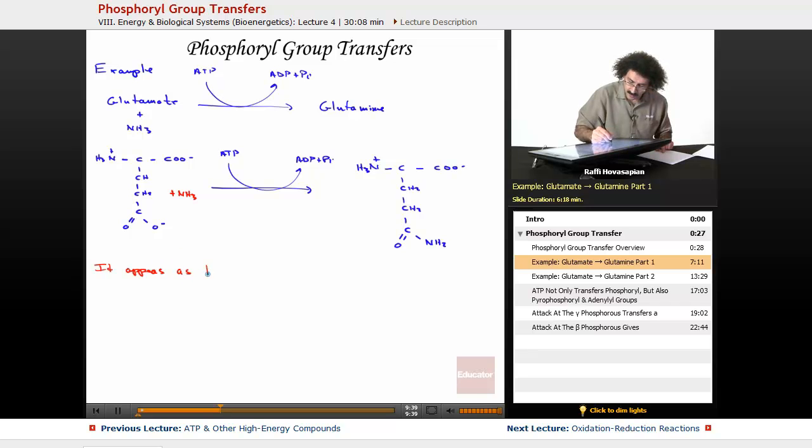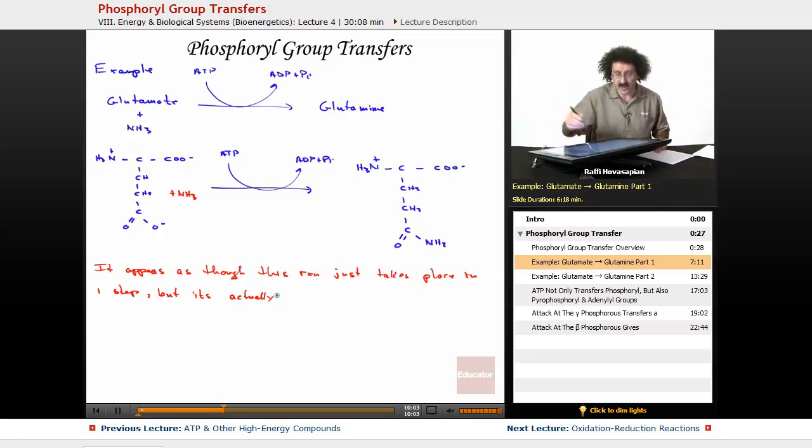Let's do this in red now. It appears as though this reaction just takes place in one step, but it's actually two. And this will demonstrate how ATP does what it does - it's actually two. So the first step is the following: we have the N, C, C, I've got CH2, CH2, C, O, O minus.